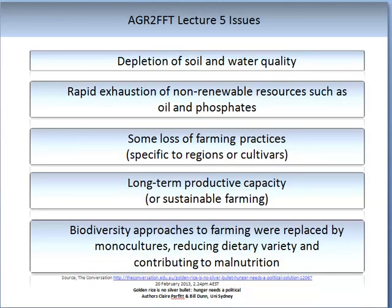The method of farming that resulted from the Green Revolution did result in some significant issues. There was depletion of soil and water quality on a scale not seen previously in agriculture. There was rapid exhaustion of non-renewable resources such as oils and phosphates due to the rapid increase in nutrient use. There was some loss of farming practices specific to regions or cultivars developed over time, long-term productive capacity loss, and less sustainable farming. Lastly, biodiversity approaches to farming were replaced by monocultural farming, which reduced diet variety and contributed to malnutrition.